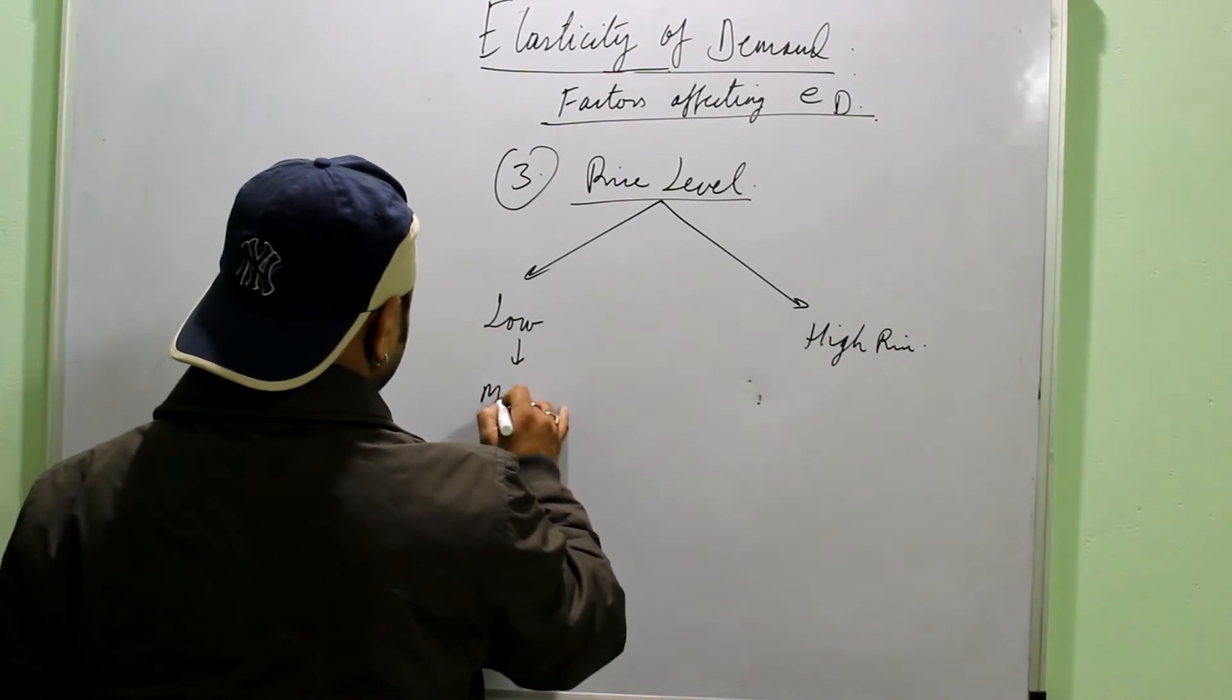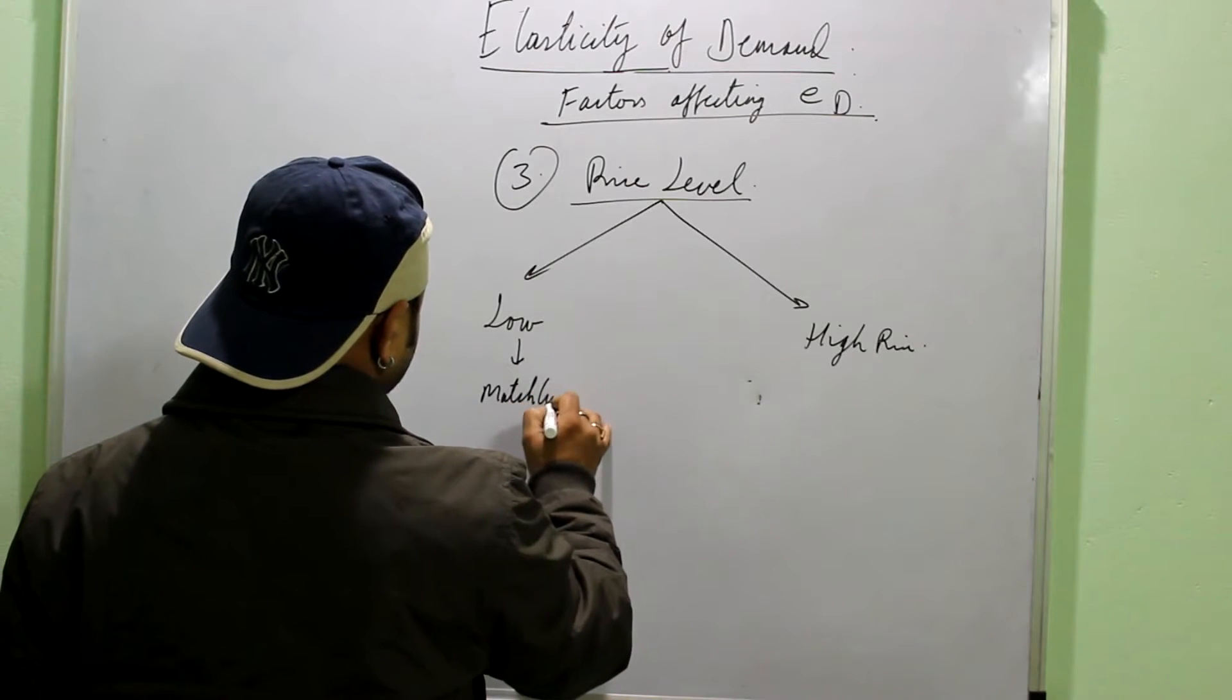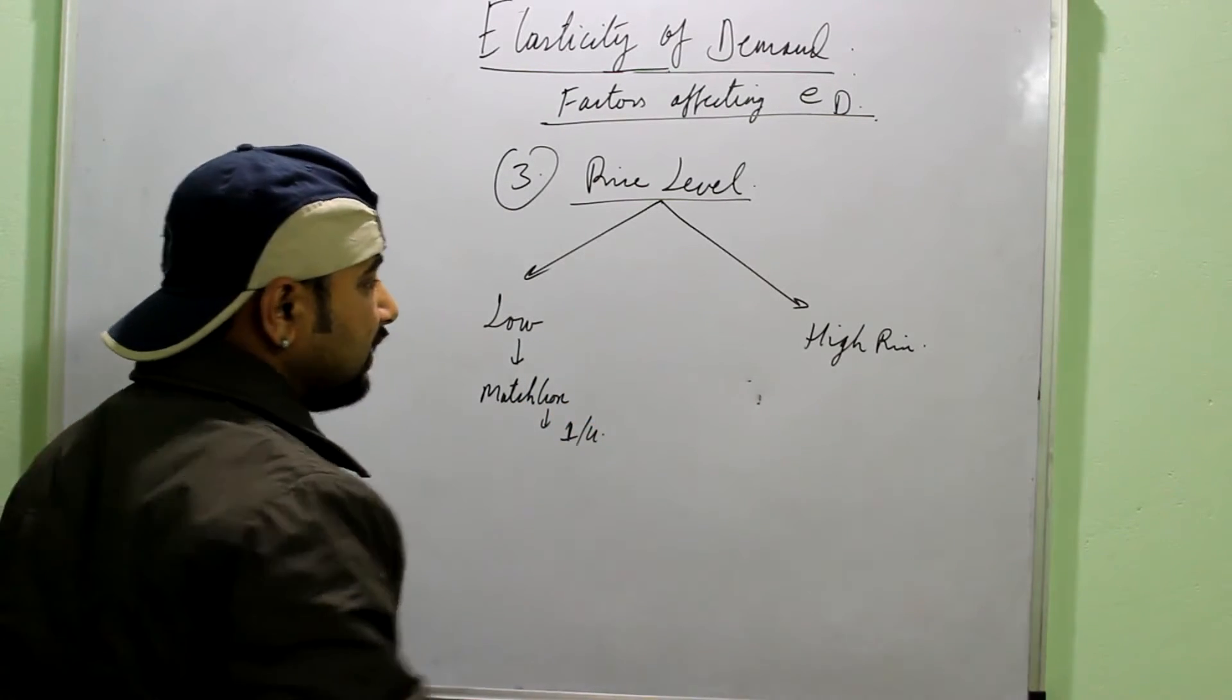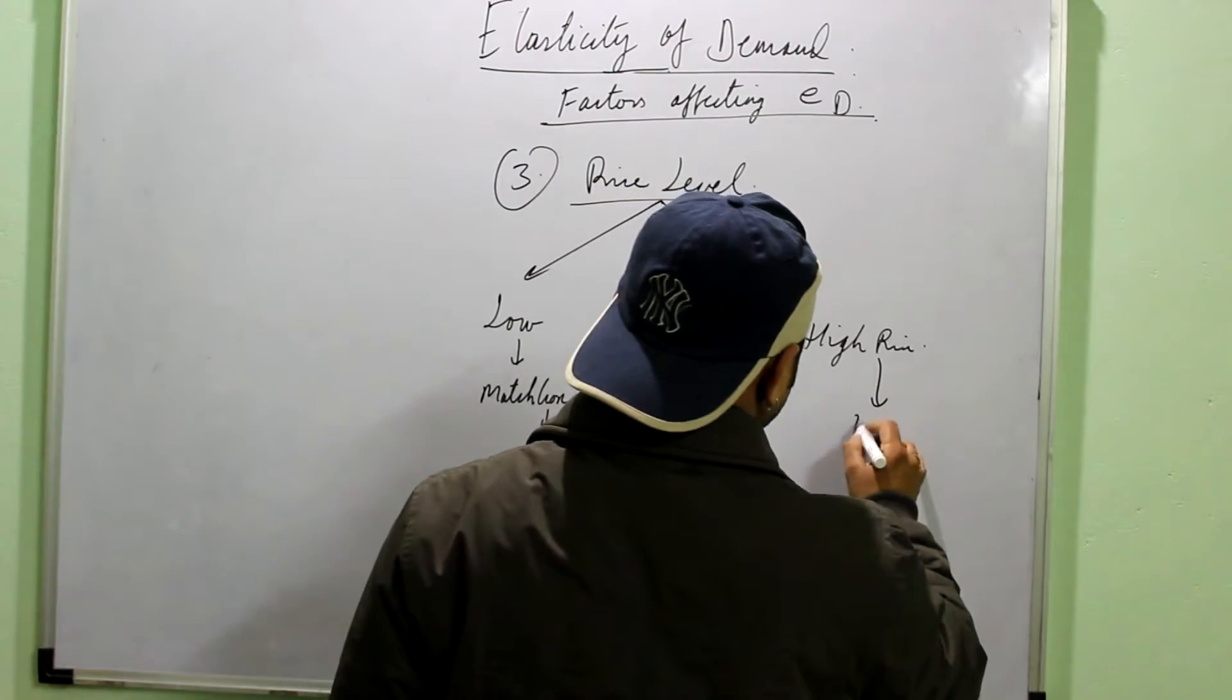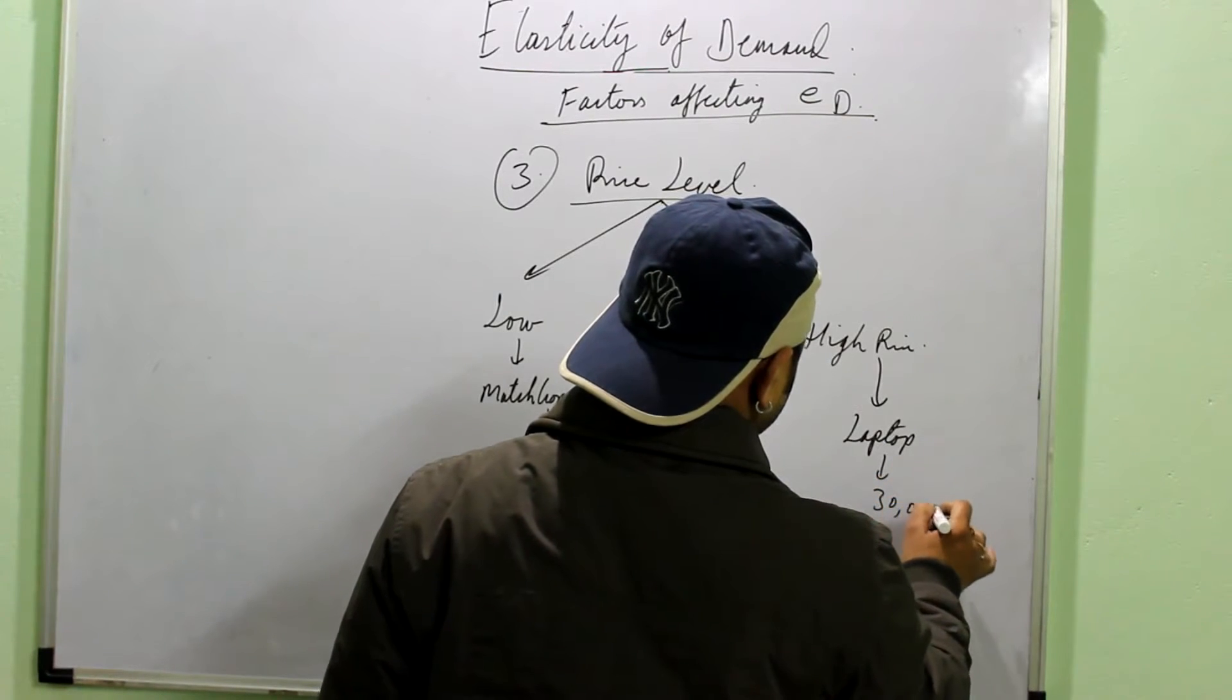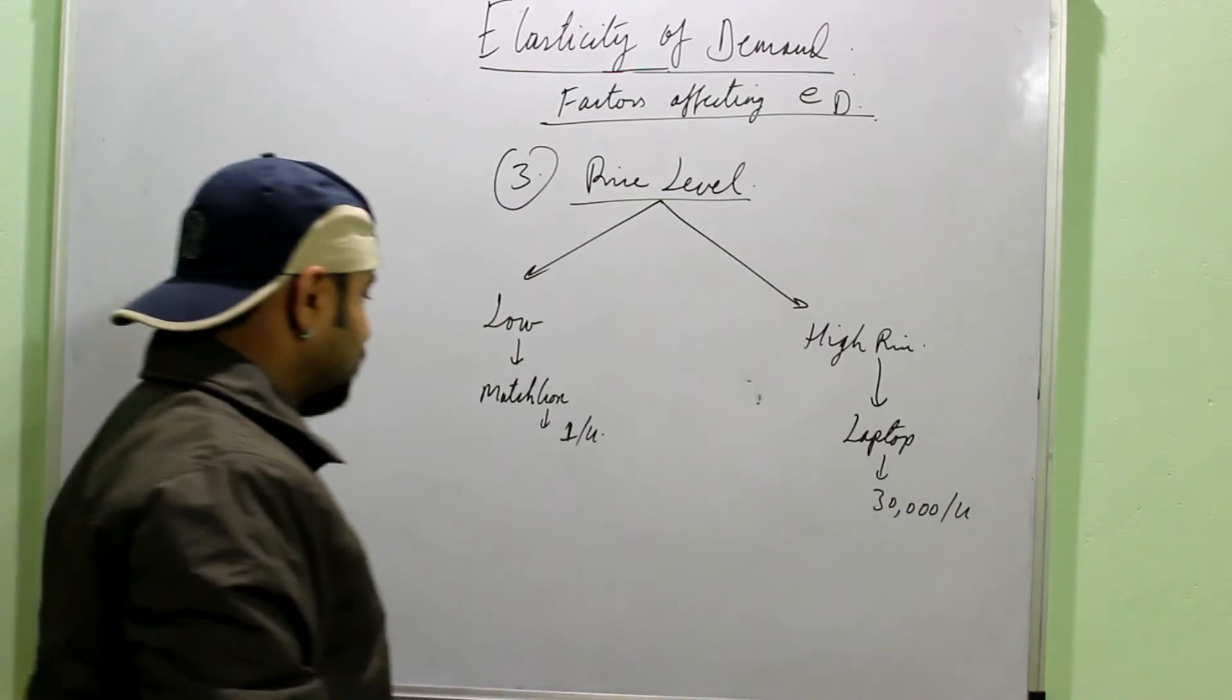Say, talk about matchbox. Say 1 rupee per unit. And say, talk about laptop. Say 30,000 per unit.